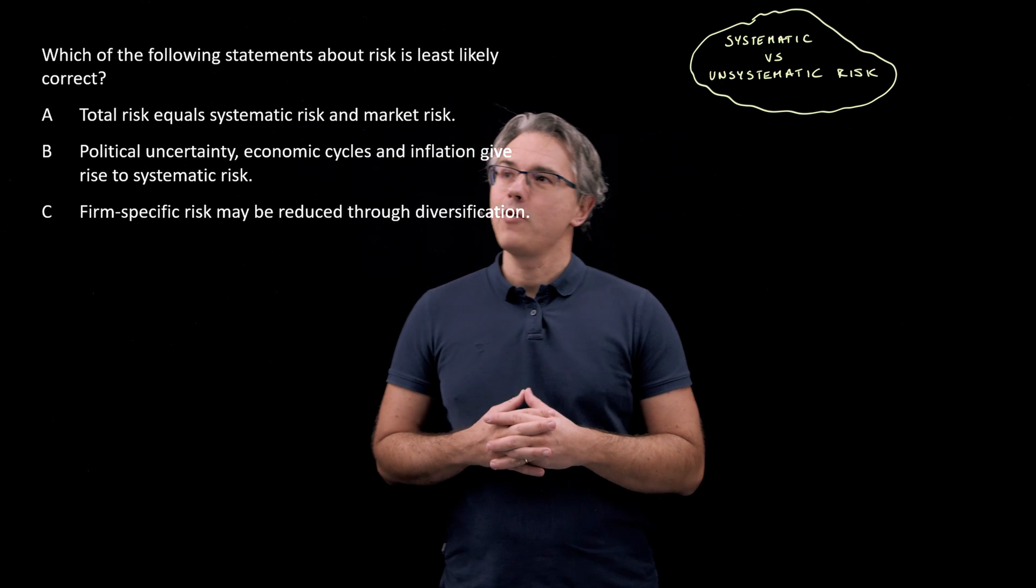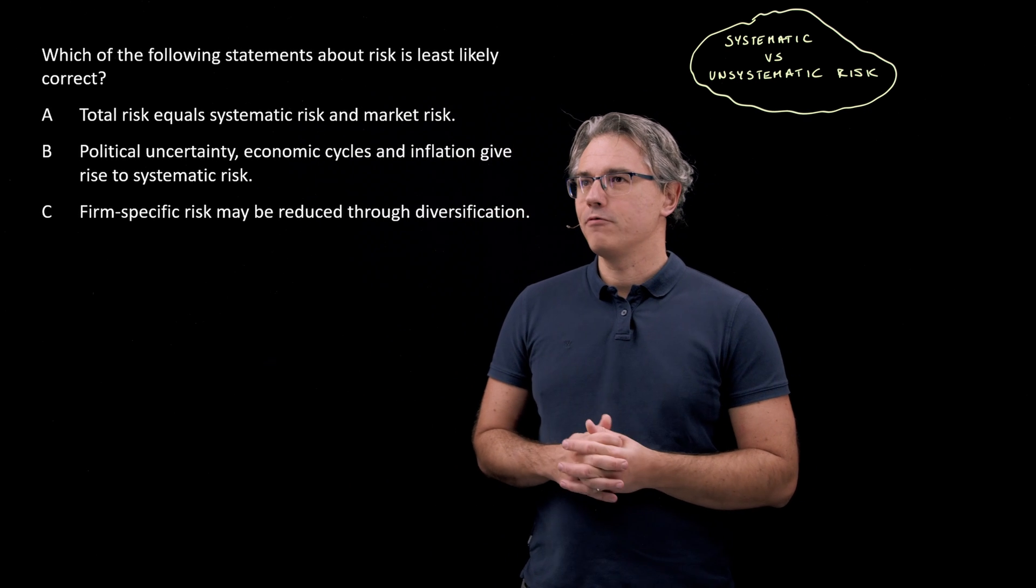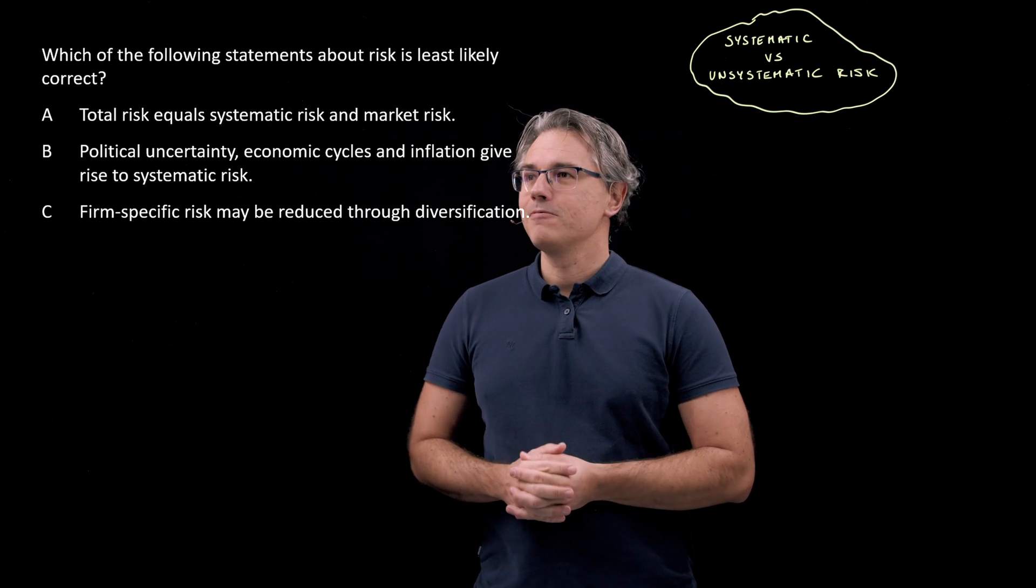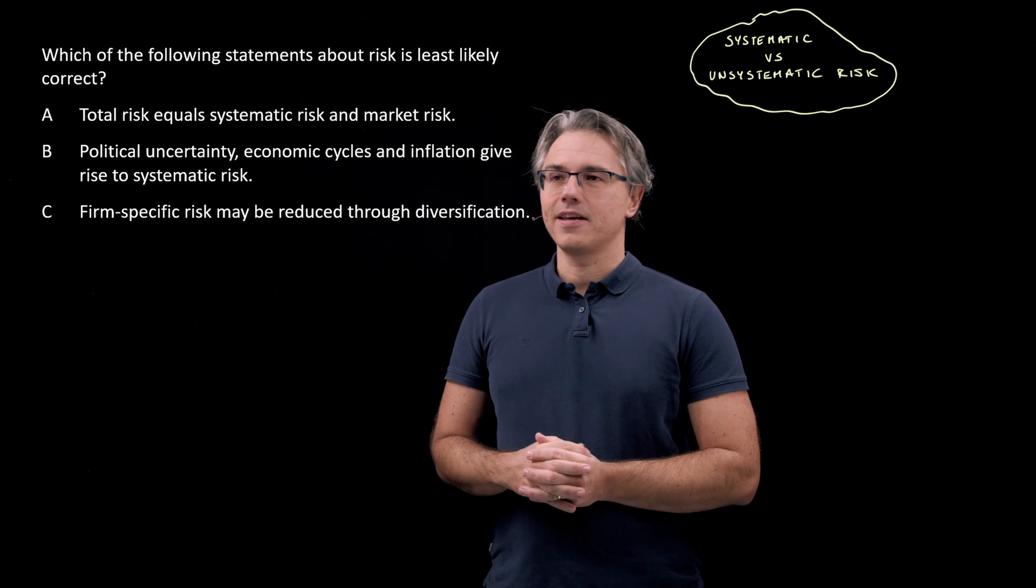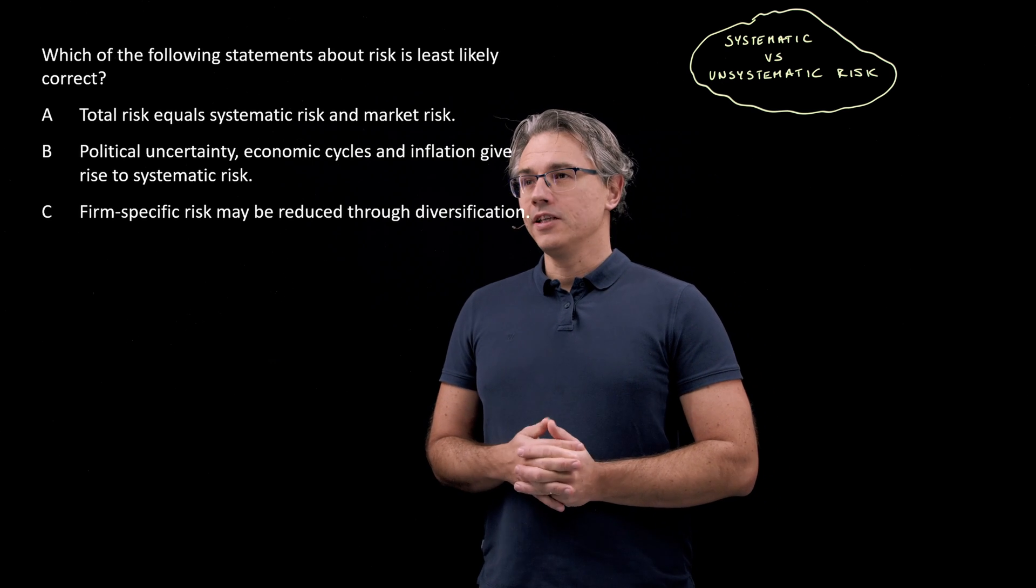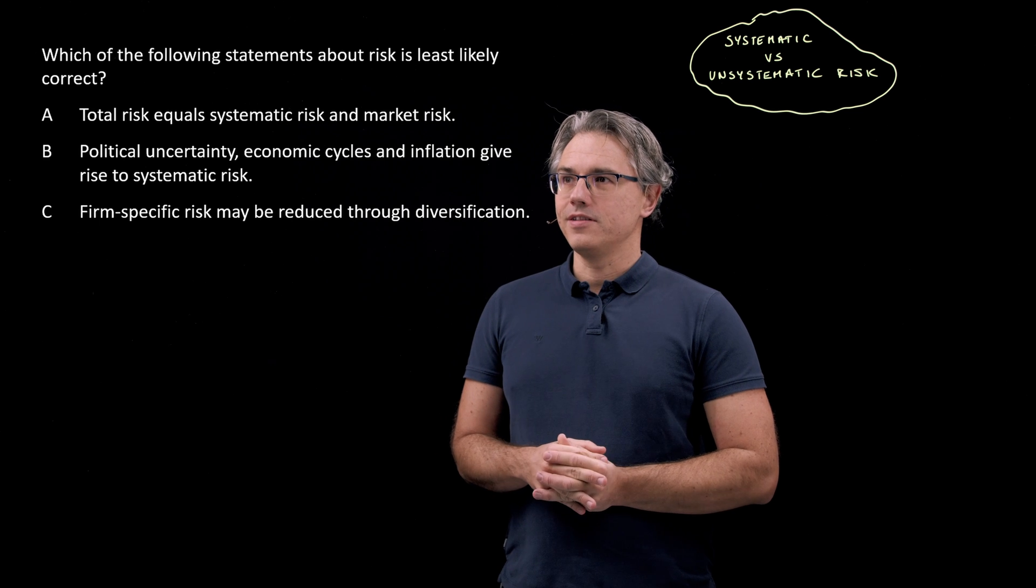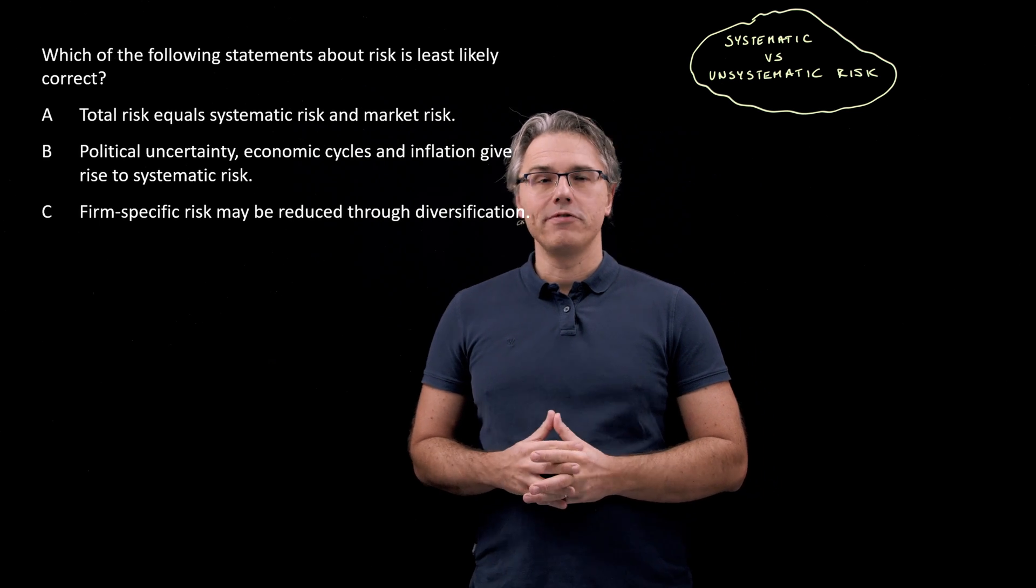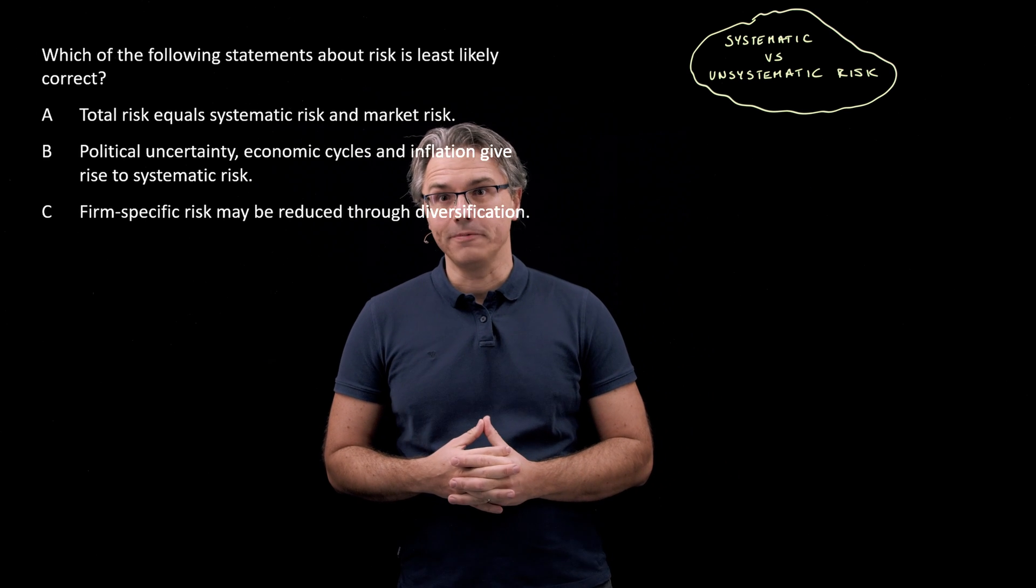So this is the question which I want us to have a go at. Which of the following statements about risk is least likely correct? A. Total risk equals systematic risk and market risk. B. Political uncertainty, economic cycles and inflation give rise to systematic risk. And C. Firm specific risk may be reduced through diversification.